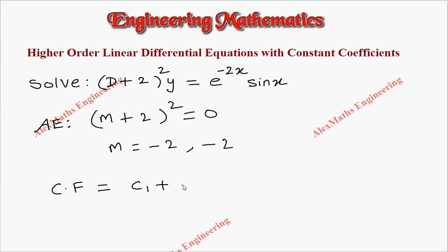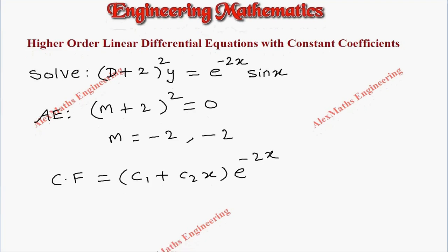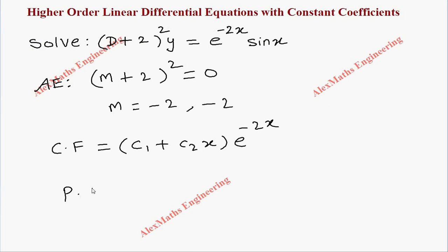Since these two values are equal, the complementary function, as per the rule, is (c₁ + c₂x) e^(mx), where m is -2.